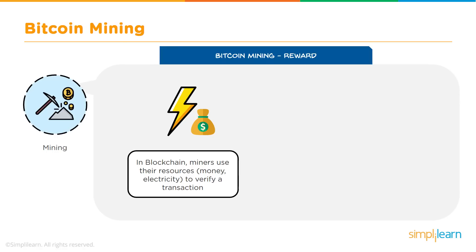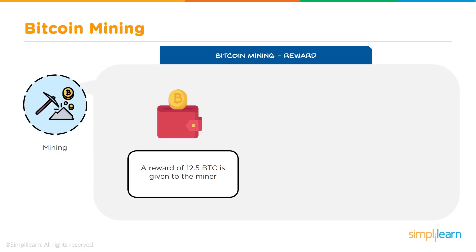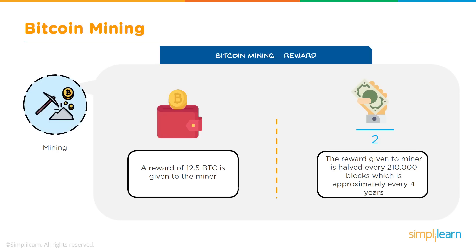Miners use their resources to verify transactions, and each time a block is mined new Bitcoins are created. The total Bitcoin supply is limited to approximately 21 million — of which 17 to 18 million have already been mined, leaving only 3 to 4 million. Currently a reward of 12.5 Bitcoin is given per block verification, but Bitcoin mining reward follows the halving principle: the reward halves every 210,000 blocks — approximately every 4 years — at which point the reward will drop to 6.25 Bitcoin.